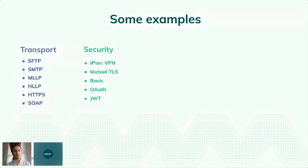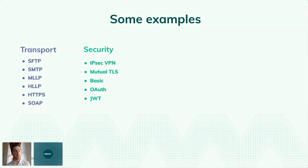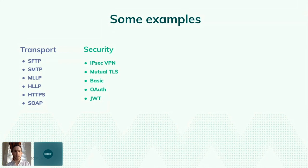Next up is security. We've defined in some ways how data is going from point A to point B — but how are you ensuring that the data sent is the right data, that no one's sitting in the middle, that the right people have authorization and authentication? A few of the things you'll see are IPsec VPNs, mutual TLS, basic authentication, OAuth, or if you're really cutting edge, JWT — JSON Web Tokens. Between transport and security there's overlap; HTTPS, for example, implicitly implies certain security standards. These different realms often overlap and self-reference other standards.